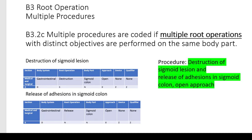Here's another guideline: multiple procedures are coded if multiple root operations are performed on the same body part. The example is destruction of a sigmoid lesion and release of adhesions in the sigmoid colon, open approach. The two root operations we're looking at are destruction and release, and you're going to code them using sigmoid colon as your body part. There are two different codes because you've got two different root operations.